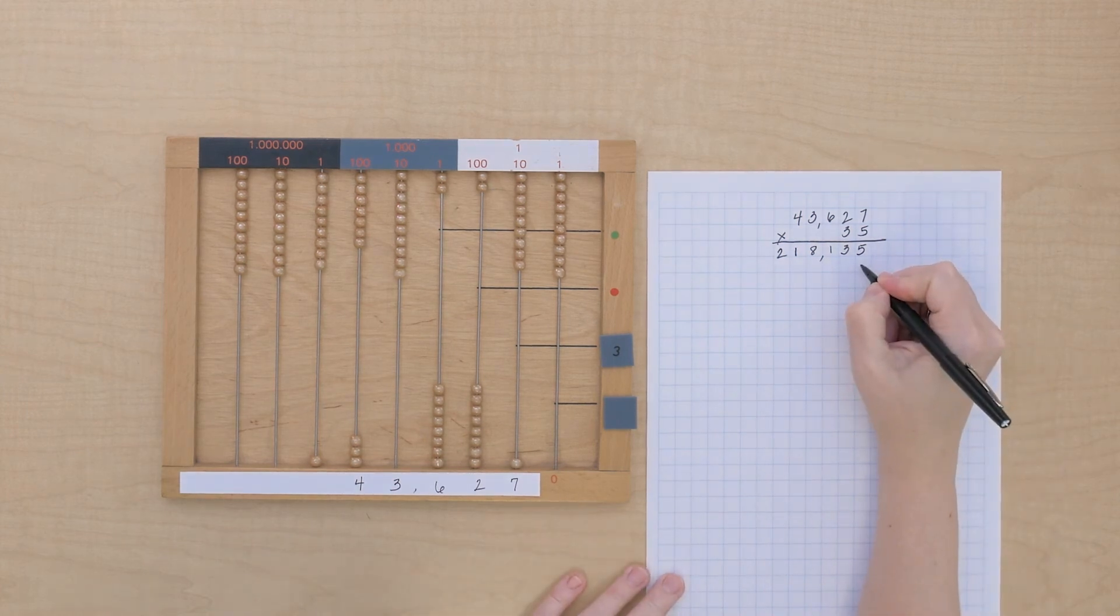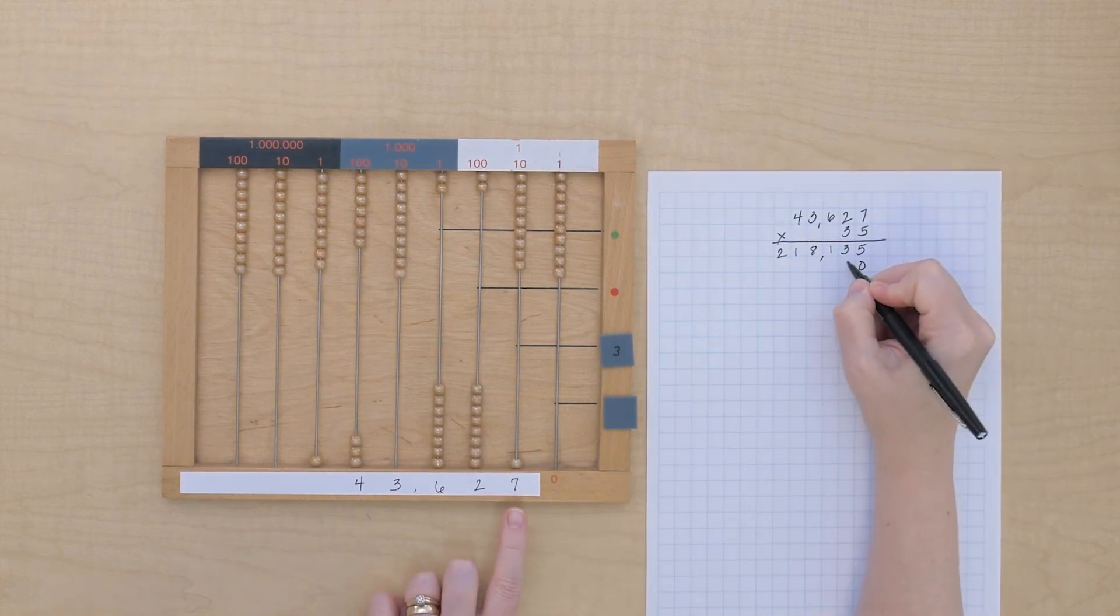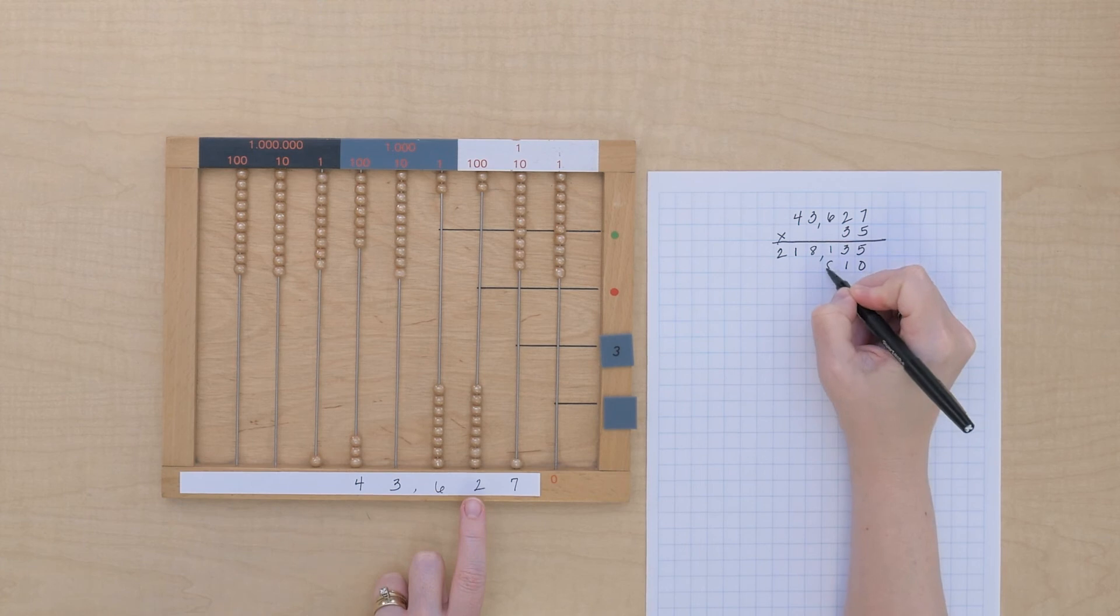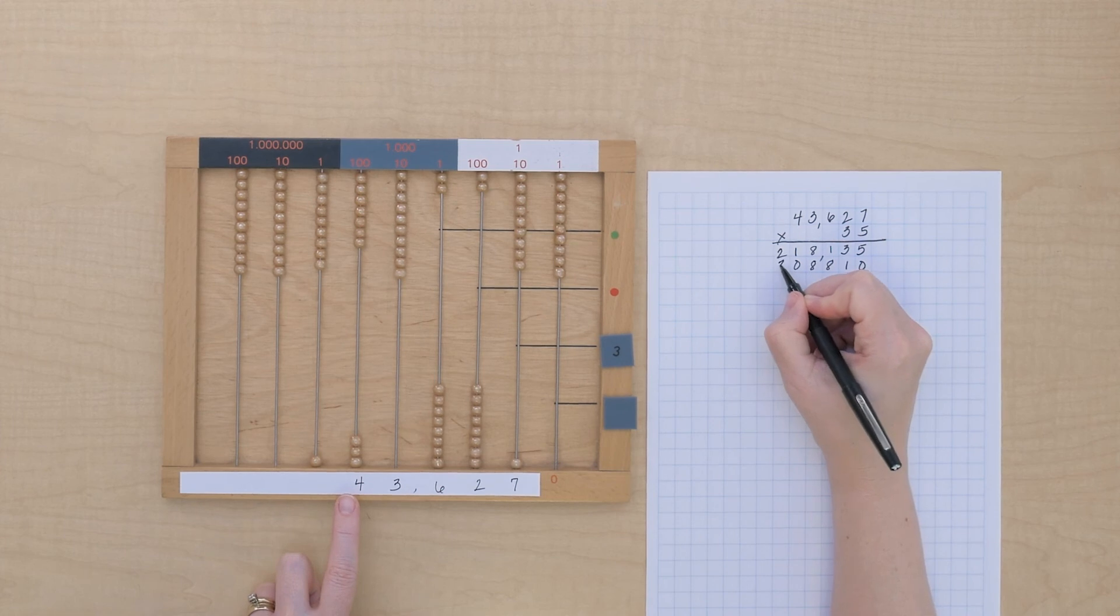We have 0 units, 1, 10, 800, 8,000, 0, 10,000, 300,000, and 1,000,000.